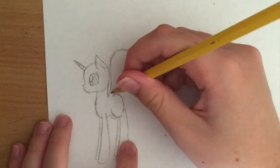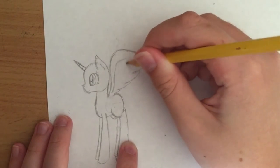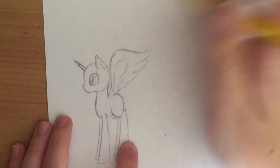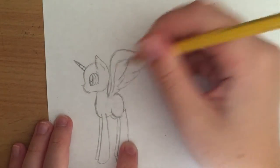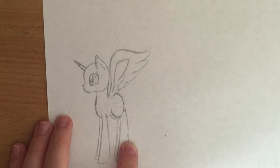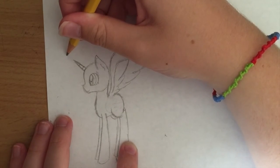And alicorns have longer horns. Alicorns also have the longer horns, as I said before, so their horns would be about here and then just go to about there.